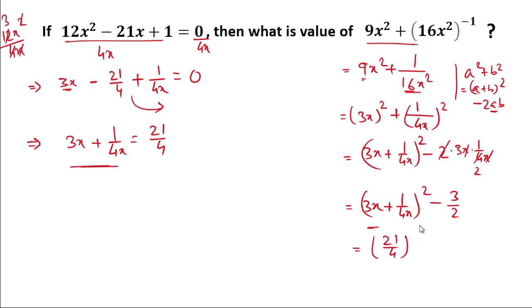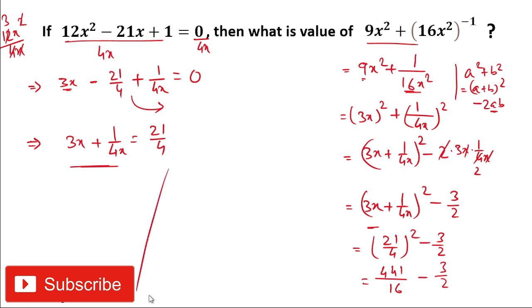21 squared is 441, and 4 squared is 16, so we have 441/16 minus 3/2. Now we'll write this equation: 441 divided by 16 minus 3/2.